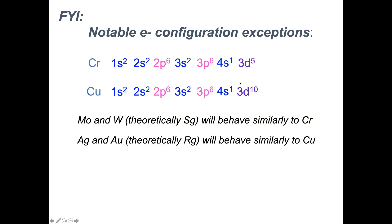I want to mention very quickly — and I don't want you to get confused here — there are some exceptions on the periodic table. You do not need to know them. I want you to know they exist because if you look up the configuration for copper on the internet, you're going to see something different. Don't use that. I'll know you're not actually doing the work because it doesn't follow the Aufbau Principle. We need to fill our least energetic orbitals first. We always follow Aufbau for us.